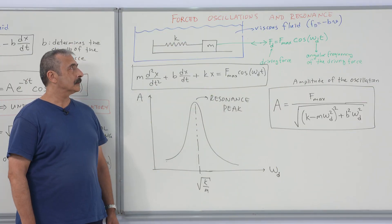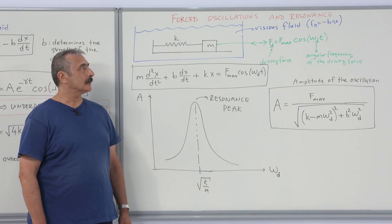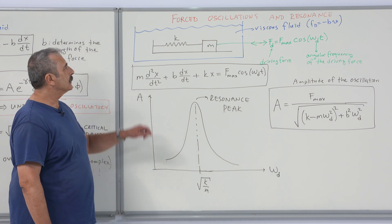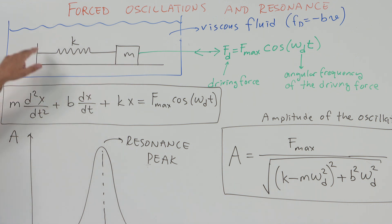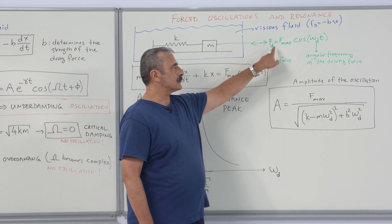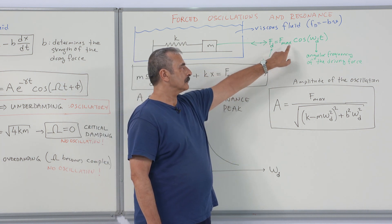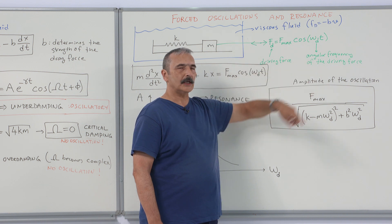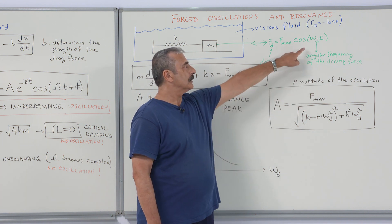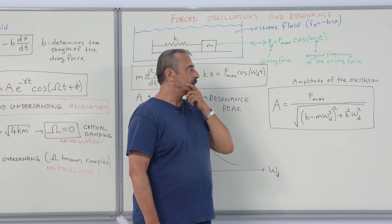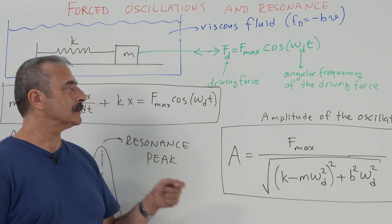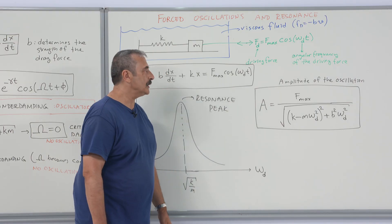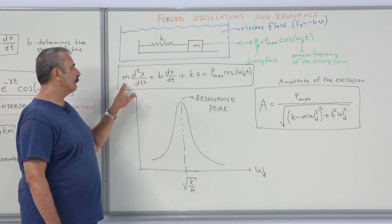Finally, let's introduce forced oscillations and resonance. Taking our spring-mass system again immersed in a viscous fluid with drag force, and applying an extra driving force equal to F_max times cosine(omega_d times t), where omega_d is the angular frequency of the driving force — we are forcing the system to swing at a chosen driving frequency. The equation of motion takes this new form.